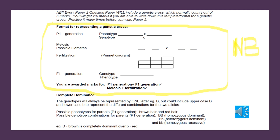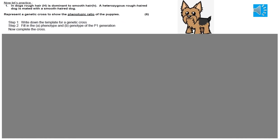A Paper 2 question paper will always contain a genetic cross. By following the template for a genetic cross, you already earn two marks for stating P1, F1, meiosis and fertilization. A monohybrid cross involves only one characteristic — such as flower colour, seed shape, or eye colour. Complete dominance refers to a cross where the dominant allele masks the expression of the recessive allele in the heterozygous condition.